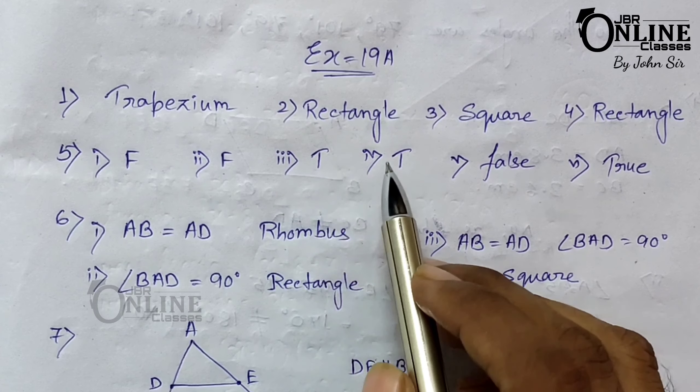Number six: ABCD is a parallelogram — what special name will you give it under the following conditions? If AB equals AD, then AB and AD are two adjacent sides, so it becomes a rhombus. There are no 90-degree angles specified, so it is only a rhombus, not a square.